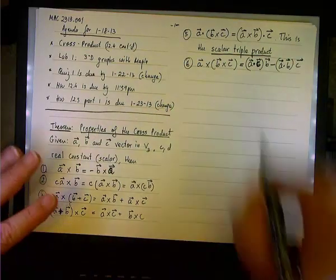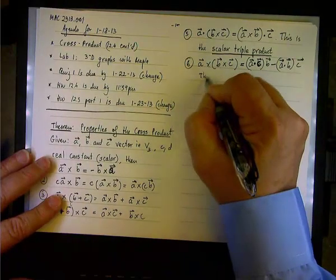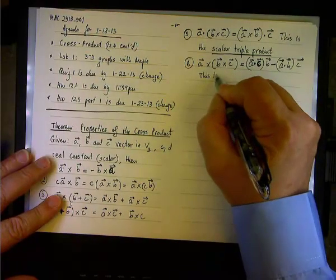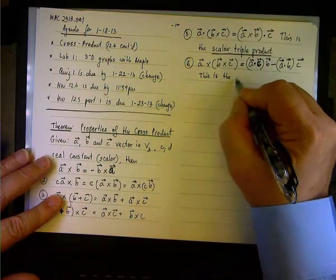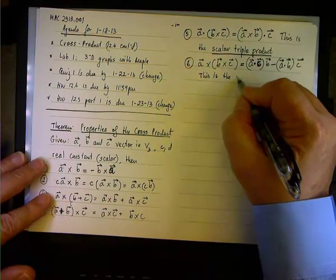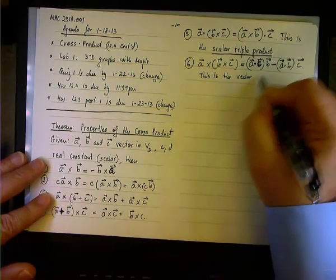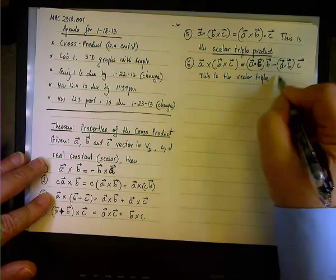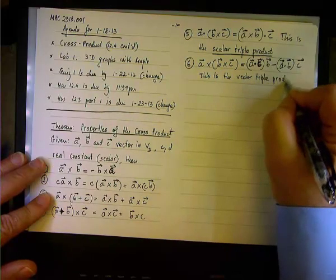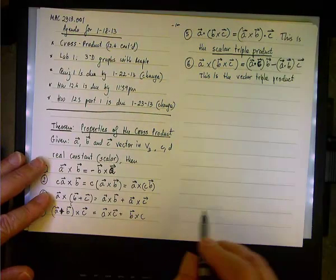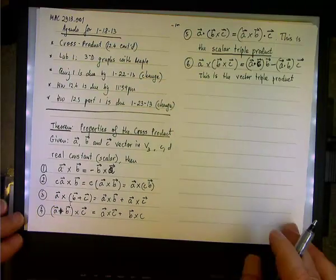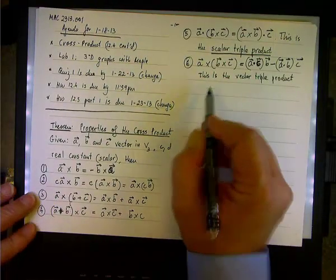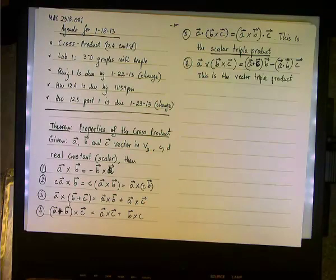Okay, so if you have the triple, the vector triple product, notice that the result is a difference of two vectors. All right, so these are the properties.